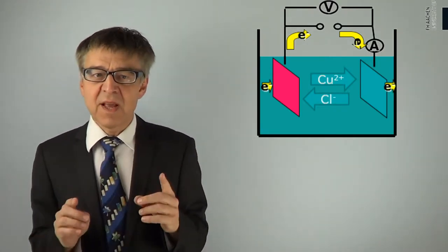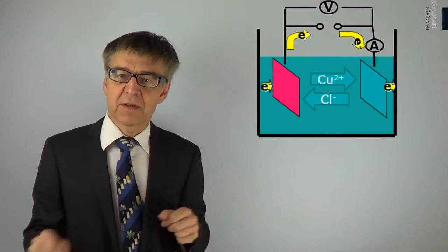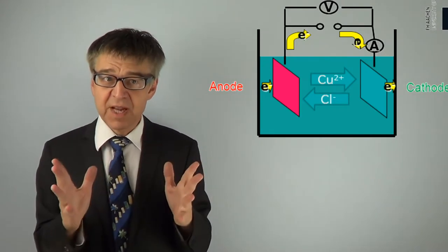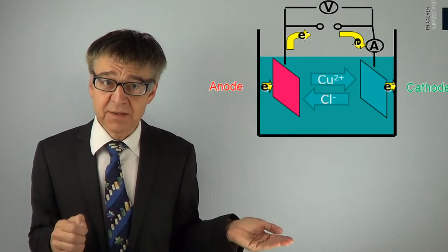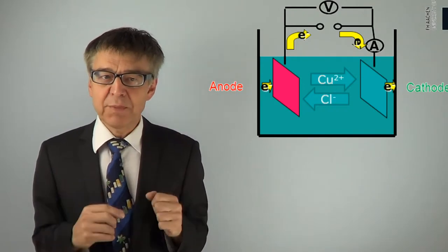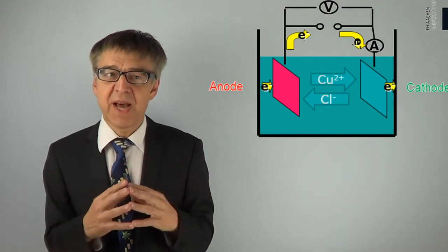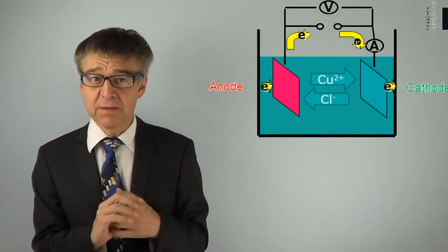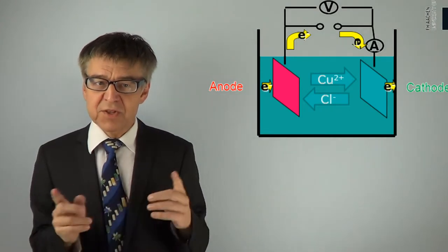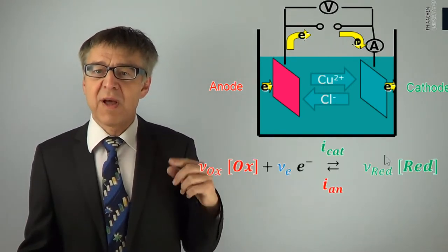A cathode is characterized in that electrons move from the electronic conductor to the ionic conductor. An anode is characterized in that electrons move from an ionic conductor into an electronic conductor. Note that anode and cathode cannot be generally described as positive or negative. The polarity depends on whether the electron flow passes freely in a galvanic cell or is forced in an electrolytic cell. The exchange of electrons at an electrode is expressed by the so-called electron transfer reaction.